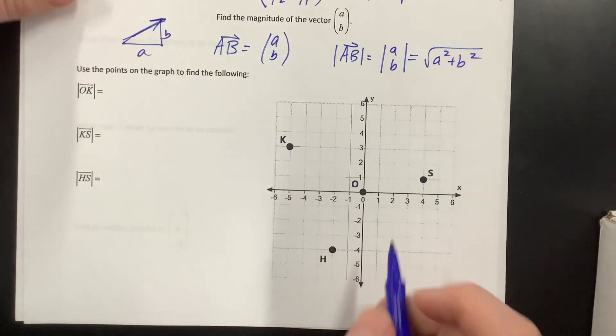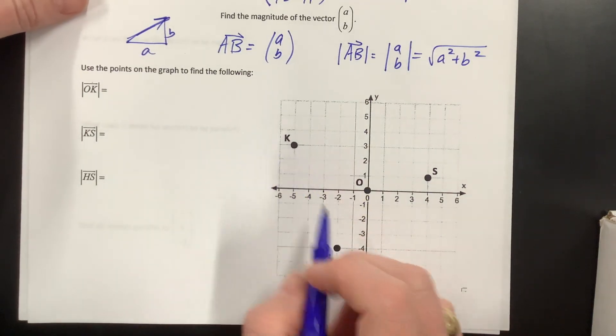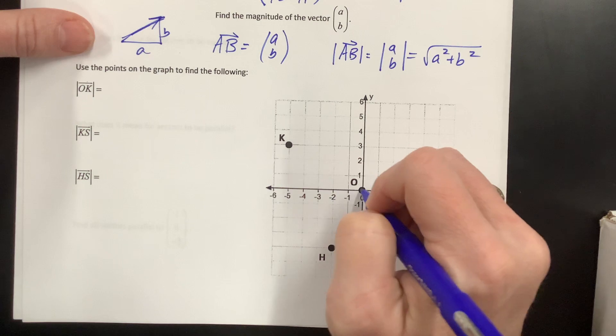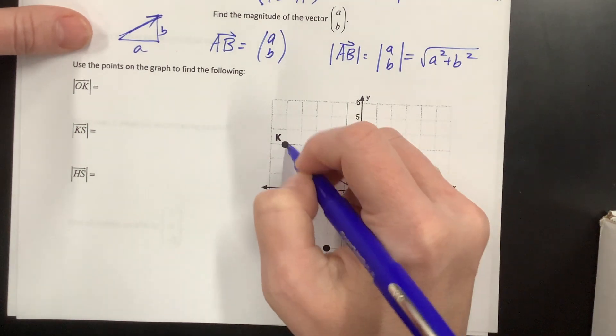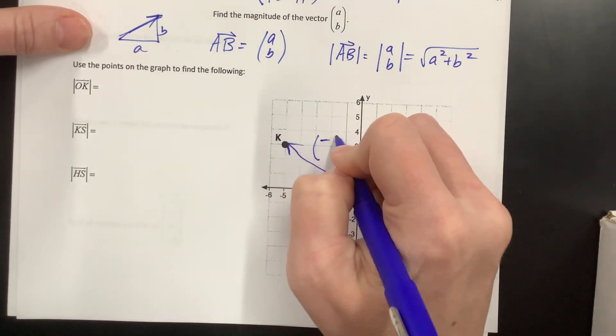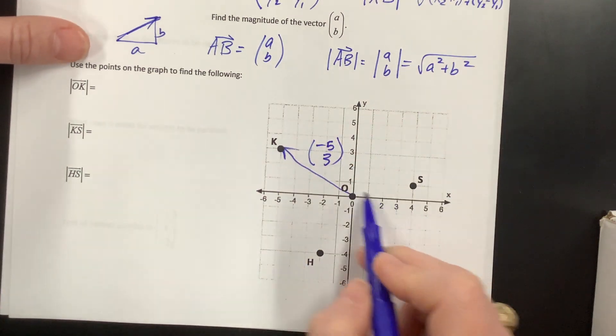Okay, these were from before. So, okay, you'll notice that this vector, okay, we're going negative 5, positive 3, negative 5, positive 3, they also want KS.